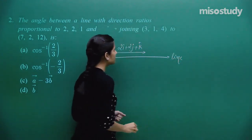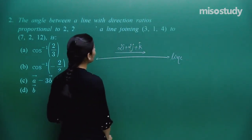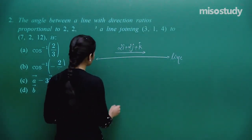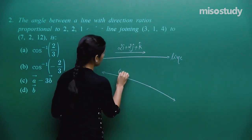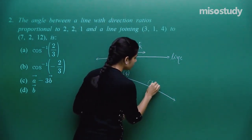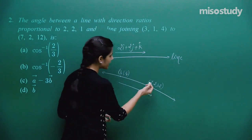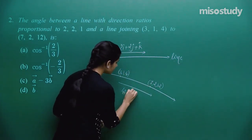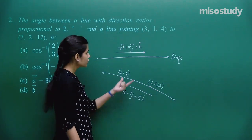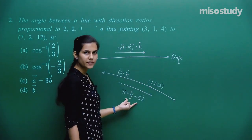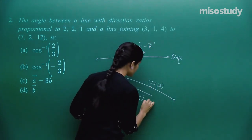This line is parallel to the vector 2i + 2j + k. The line joining points (3,1,4) and (7,2,12) is parallel to the vector (7−3, 2−1, 12−4) = (4, 1, 8). The angle between the two lines equals the angle between these two vectors. Let the angle between vector a and vector b be θ.